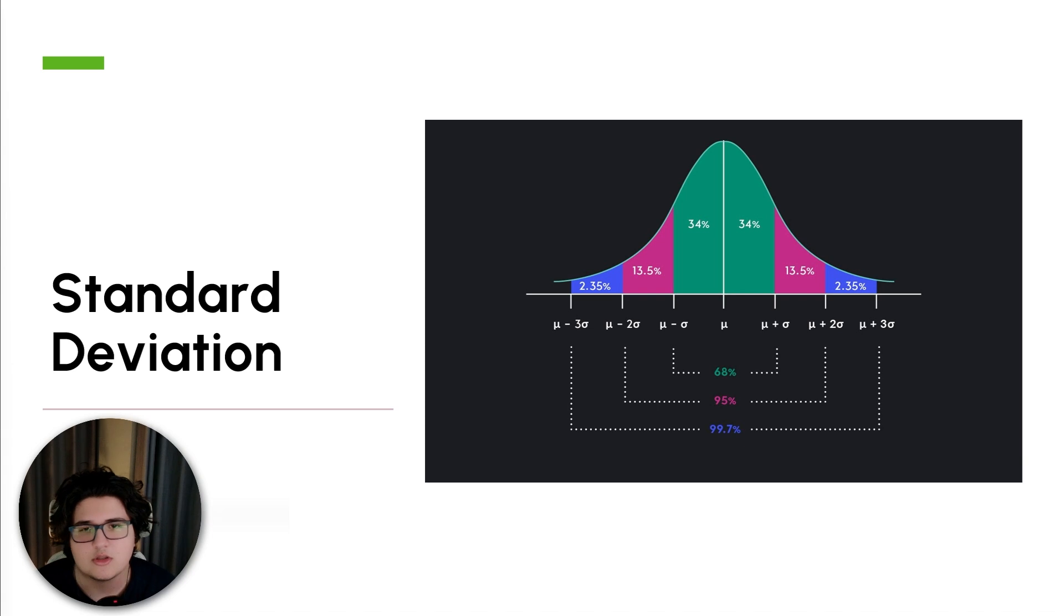This exact concept is what makes most of the common indicators like VWAP bands, which are just standard deviation bands around VWAP, the volume weighted average. By understanding the spread, you can anticipate normal market fluctuations and avoid mistaking them for significant signals, or actually create something to detect those significant signals when they move two standard deviations, three standard deviations from the average.